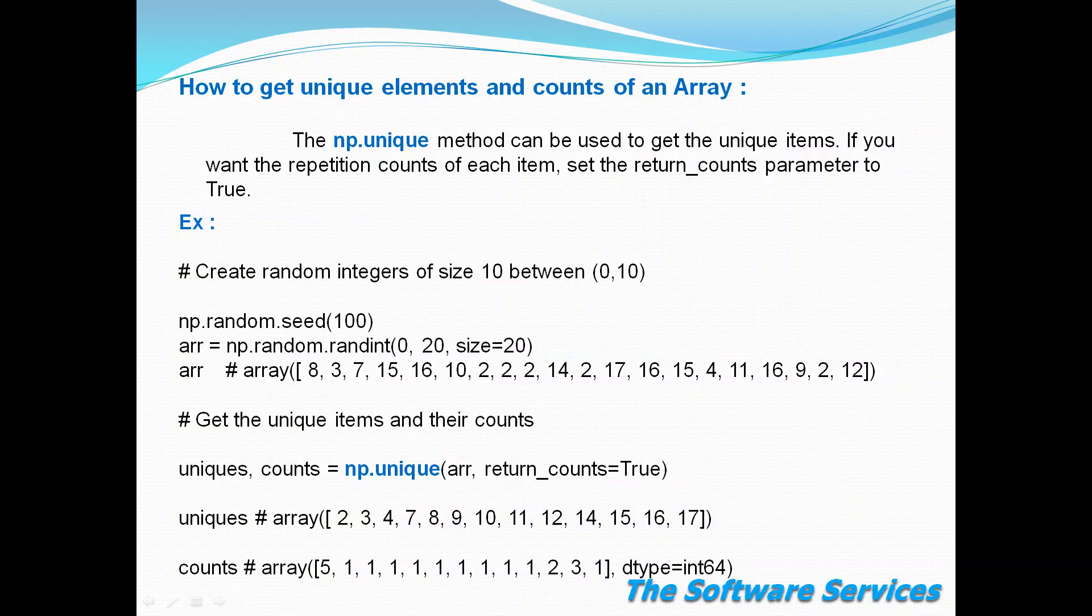We can do it with a method called unique. The np.unique method can be used to get unique items. If you want the repetition counts of each item, set the return_counts parameter to True. The same method will count as well if we pass the argument return_counts.